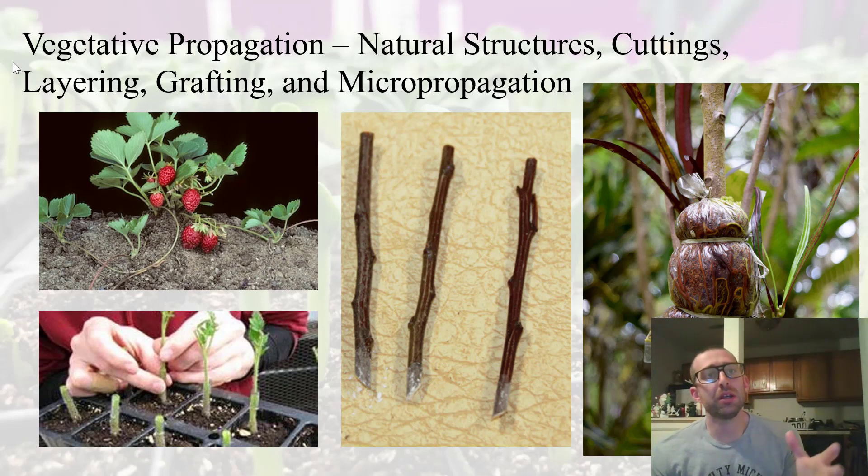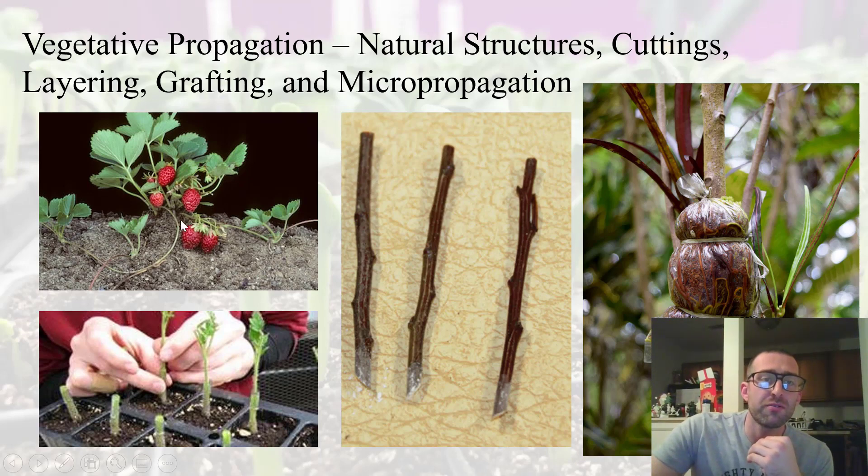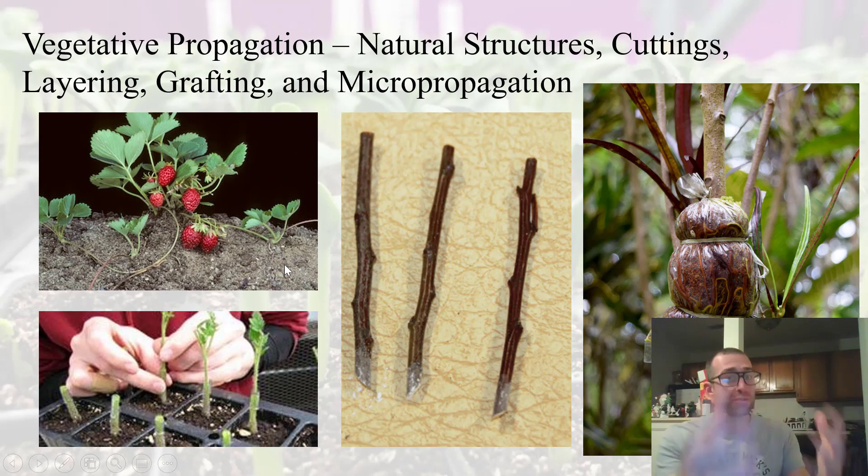Like I said in the beginning, we can propagate vegetatively through different ways. We can use our natural structures that certain plants have. Our strawberries have these horizontal stems called stolons, and from those, you can kind of see it here, that's a stolon right there from these. We have new plantlets that can develop. That's a natural propagation structure that is produced by strawberry plants. Or we can do cuttings or layering or grafting where we're actually taking different parts of the plants. And like I said in the beginning, relying on the ability of many plants to produce lost tissues to create new plants. And we'll talk a little bit about all these towards the end of the course.